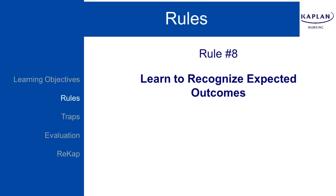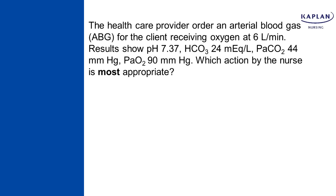Rule number eight: learn to recognize expected outcomes. This is really interesting. In nursing school, usually something was wrong with the client and you had to make a decision about what to do. On the NCLEX exam, they're testing your judgment — including discriminating what's okay and what's not okay. It's important to understand that on some questions, everything is going to be fine, and you don't have to make up a story to make something wrong.